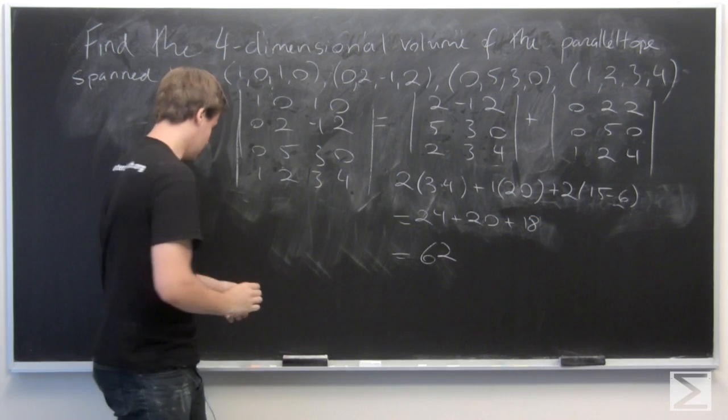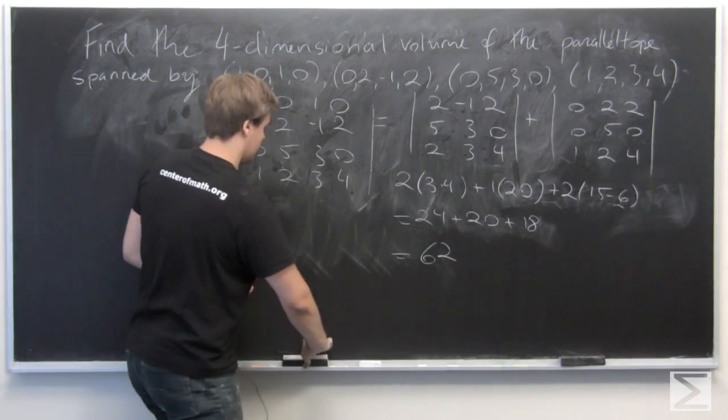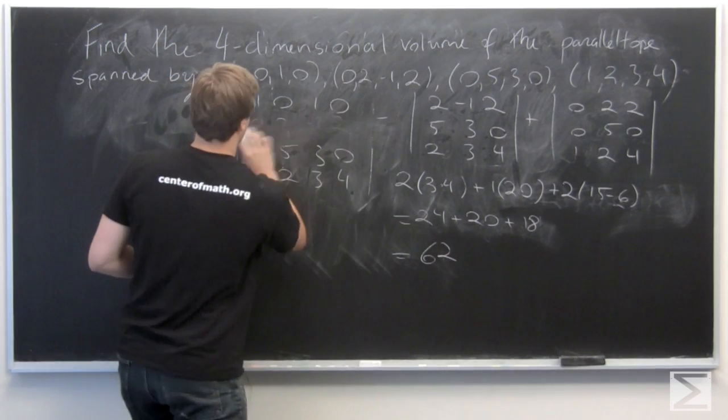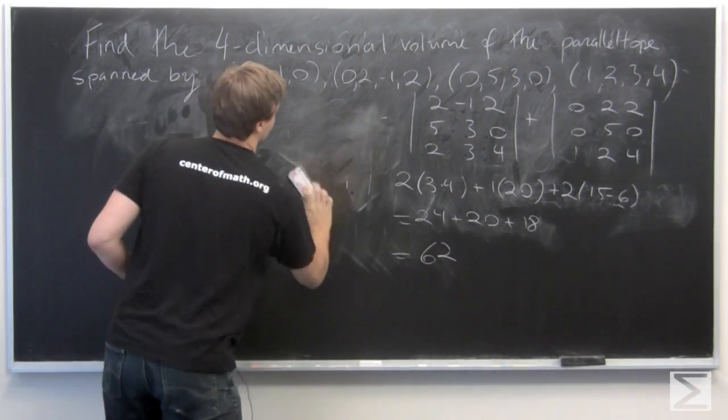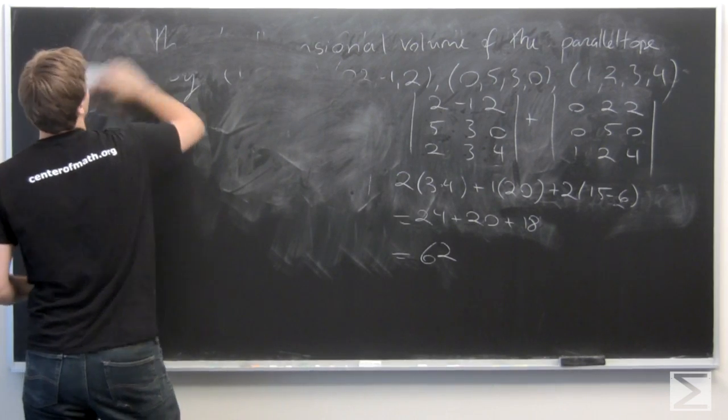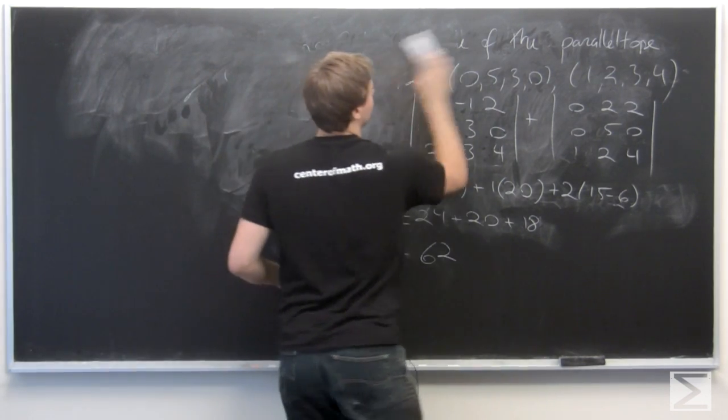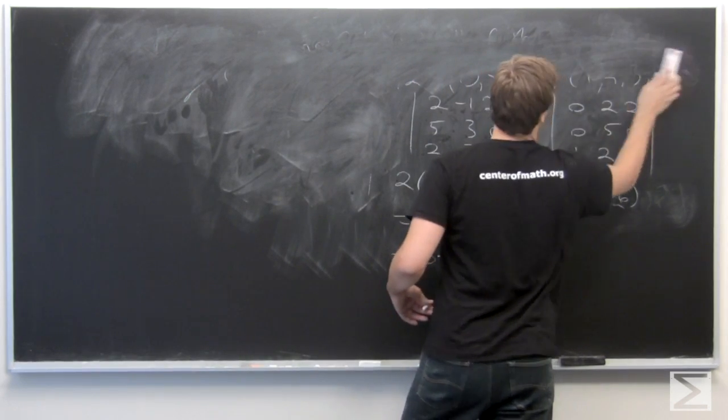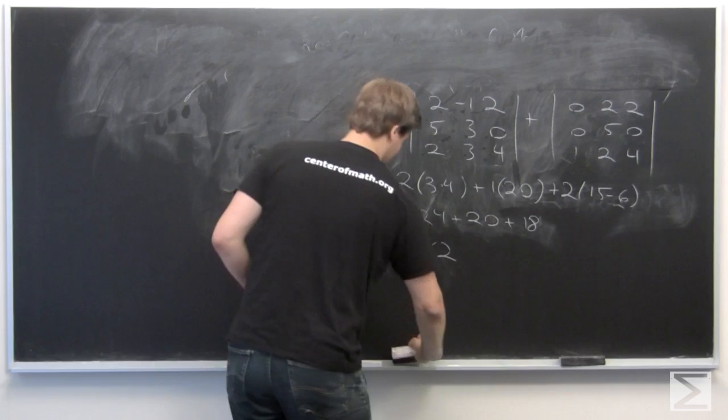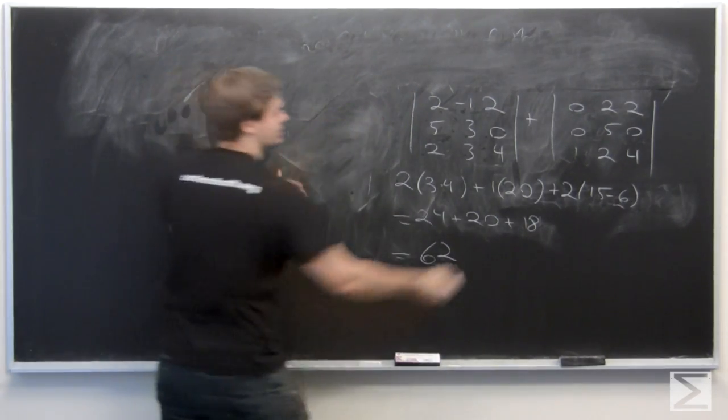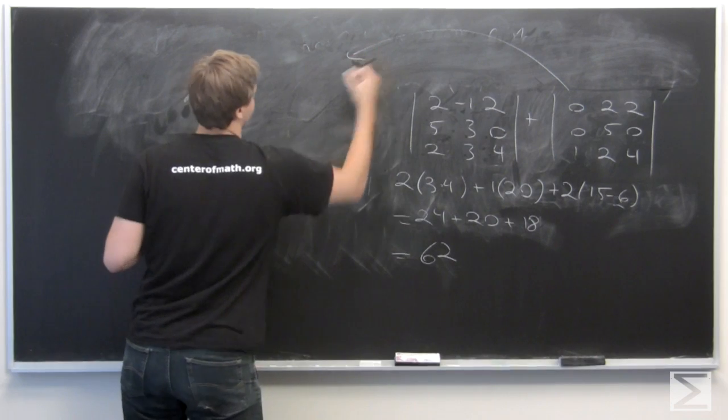Okay, cool. So now we need some more room. Let's erase all this. Okay, so that was the first matrix. Now let's calculate the determinant of the second one and add it on.